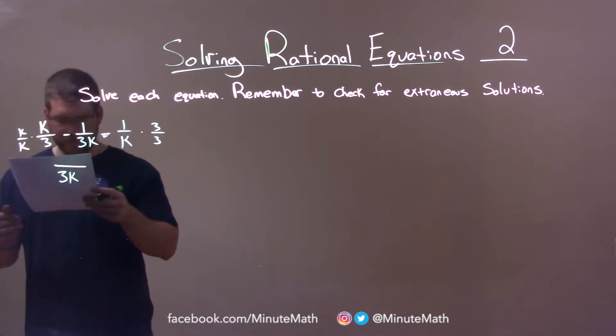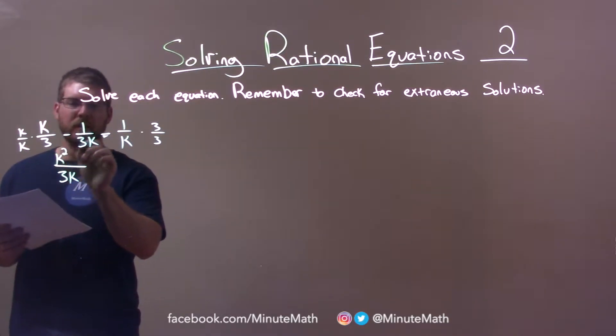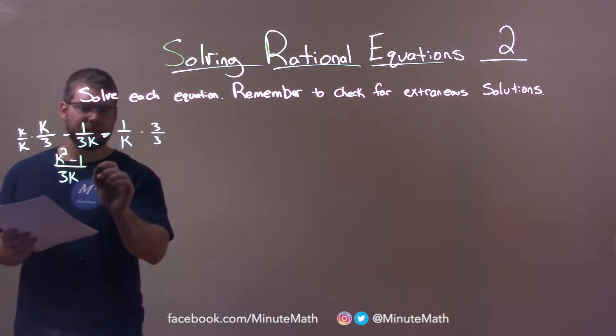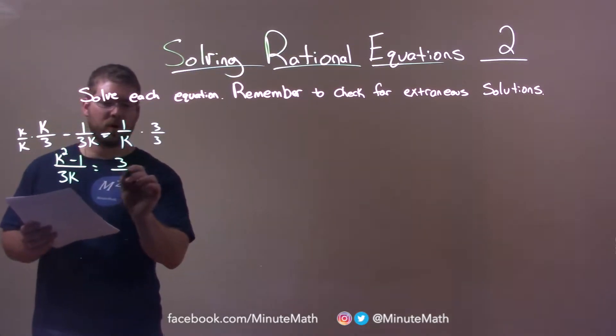So, our numerator, we have k times k is k squared, and that's just minus the 1. So, here we have 3 over 3k.